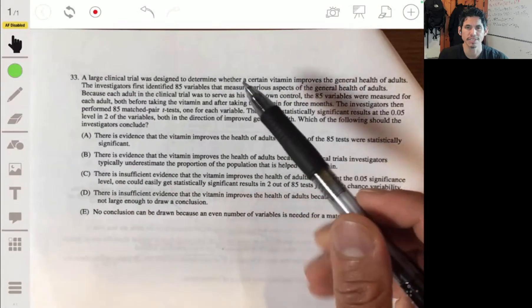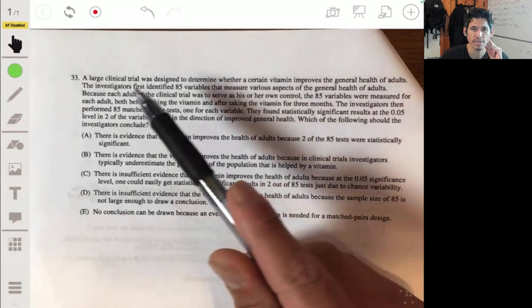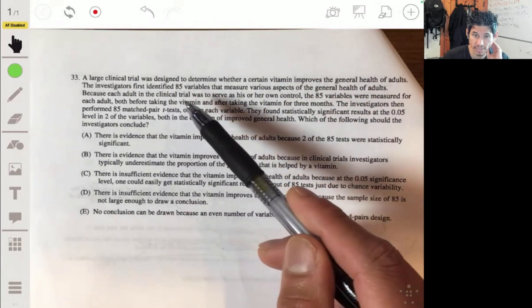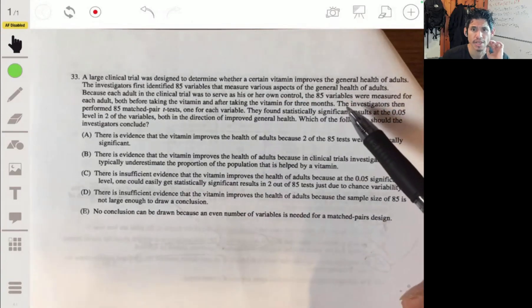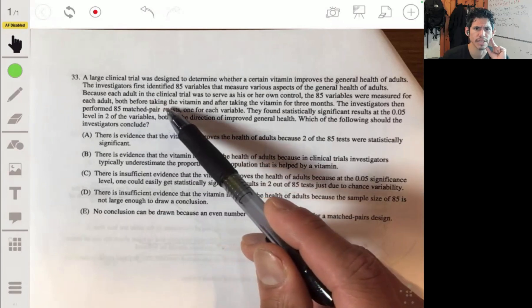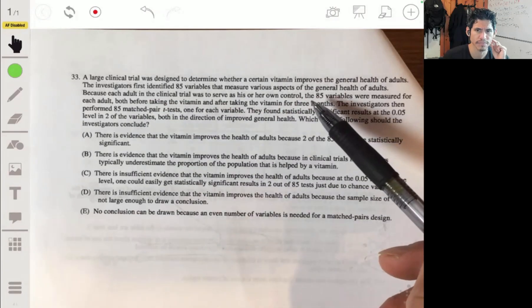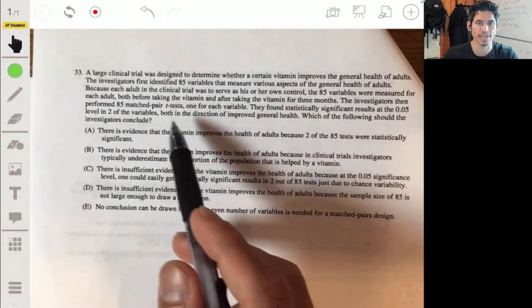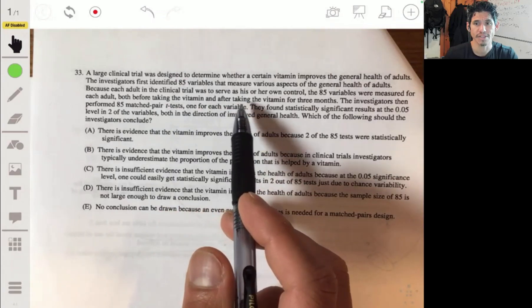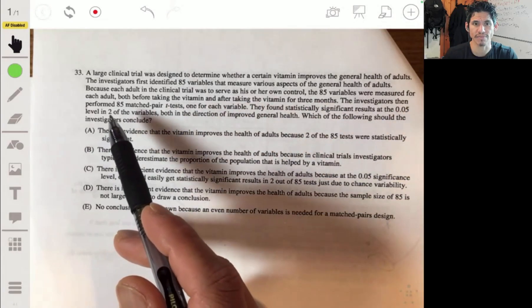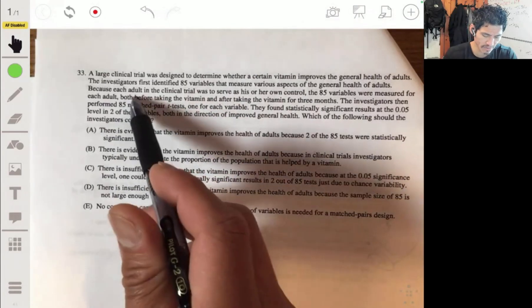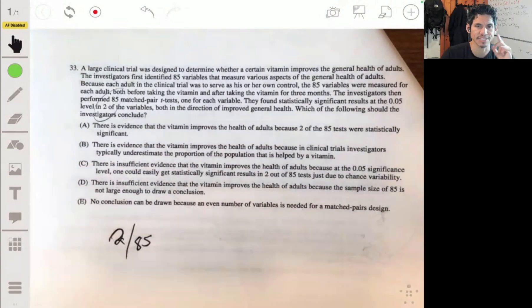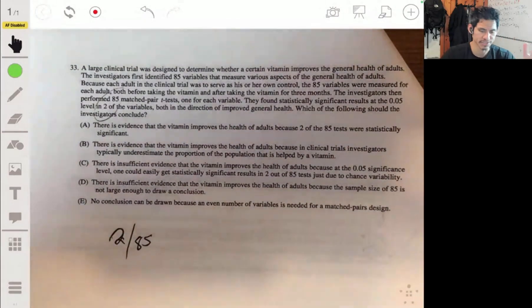33. A large clinical trial was designed to determine whether a certain vitamin improves the general health of adults. Investigators first identified 85 variables that measure various aspects of the general health of adults. Because each adult in the clinical trial was to serve as his or her own control, 85 variables were measured for each adult, both before taking the vitamin and after taking the vitamin for three months. I shouldn't have paused there, but they were measured before and after, and the investigators performed 85 match-paired t-tests, one for each variable. They found statistically significant results at the 0.05 level in two of the variables. So two out of the 85, I already know what they're getting at.